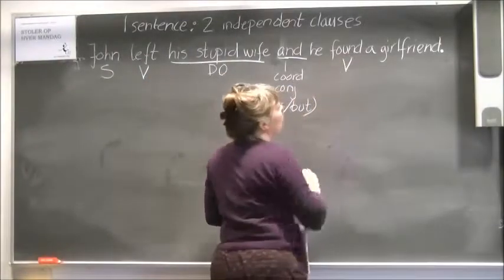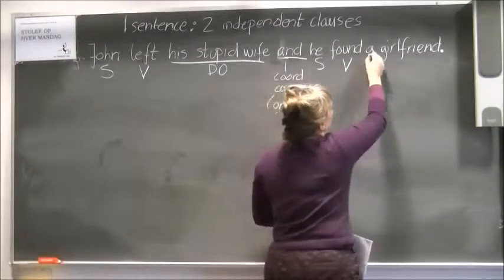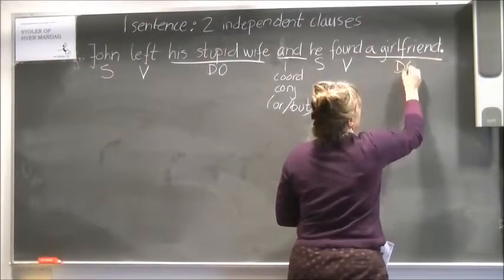Over here we have the verbal: found. Who found? He found. What did he find? A girlfriend, which is a direct object.